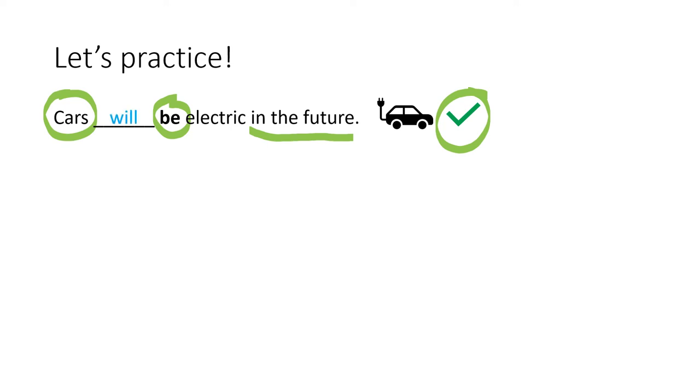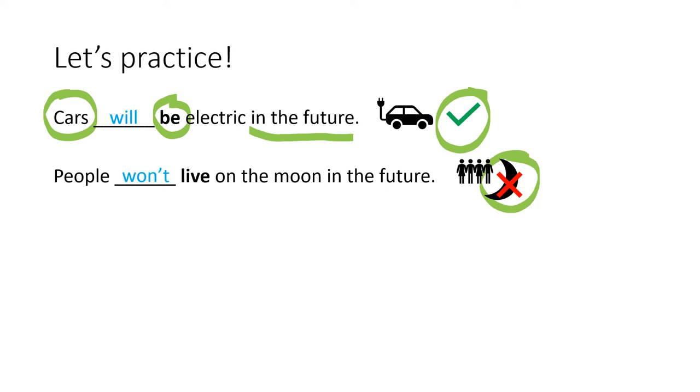The next one: people live on the moon in the future. Well, we've got a cross here, so I think it will be negative. And that means people won't live on the moon in the future.